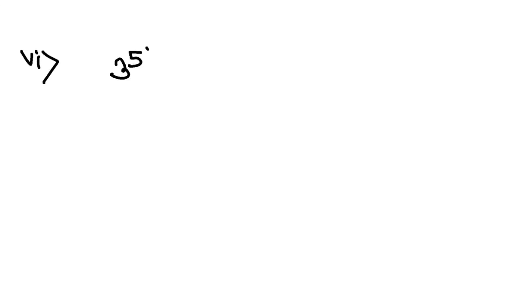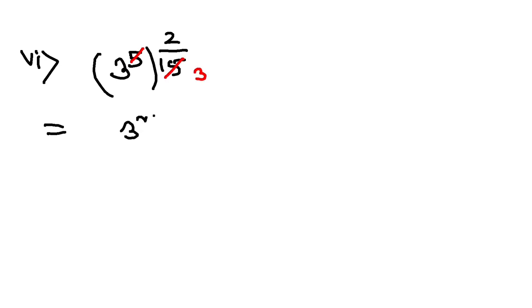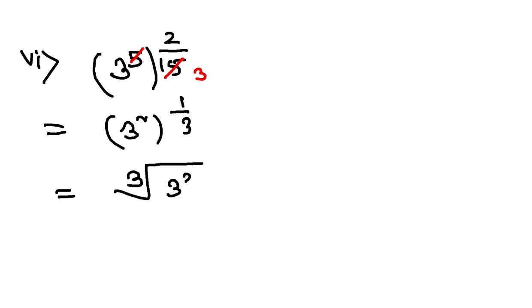Let us move to the last question, question number 6: 3 to the power 5, whole to the power 2 by 15. Here 5 and 15 cancel 3 times, so I am left with 3 squared, whole to the power 1 by 3. That means the cube root of 3 squared, or the cube root of 9. That is your final answer. So we have discussed question number 3, and in the next video we shall be discussing the next question.